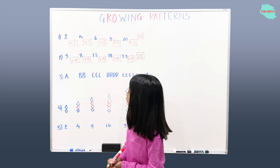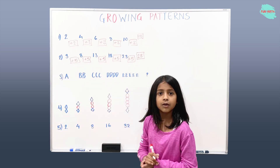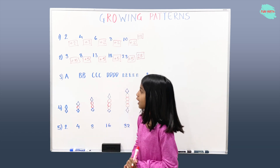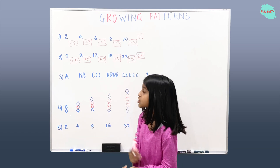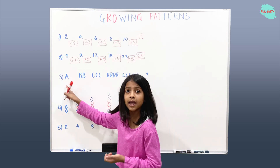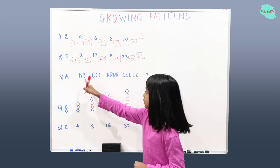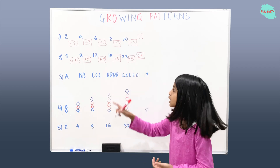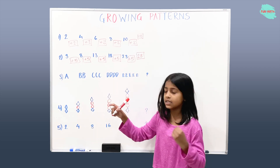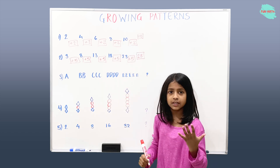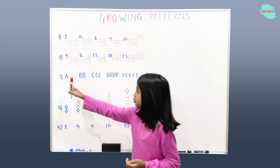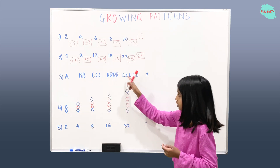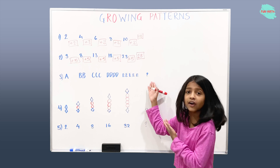Since we found the rule for example two, the rule is plus five. Now let's move on to example three. In example three it's growing — there's one A, two B's, three C's, four D's, five E's. So if you see there's a pattern: one, two, three, four, five. And we have to find the sixth term.